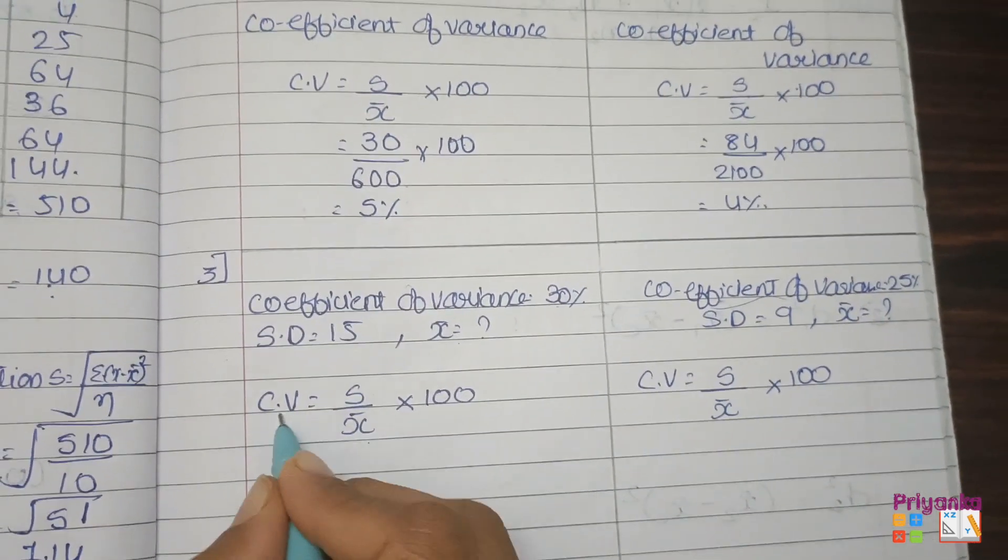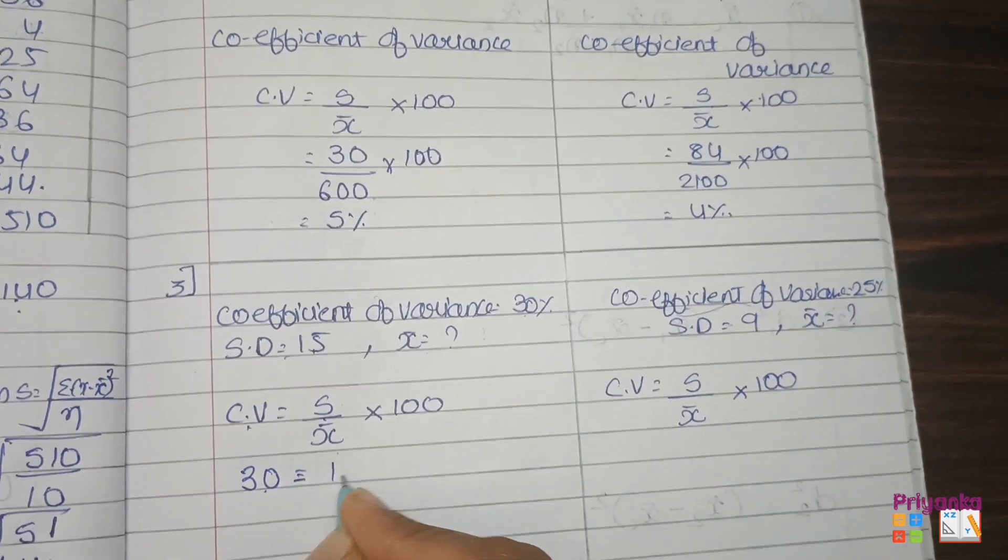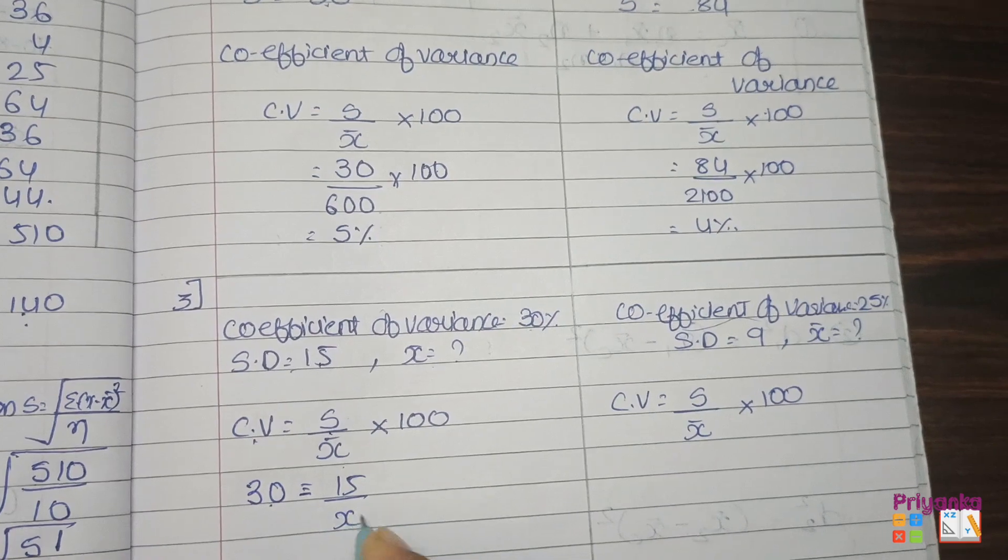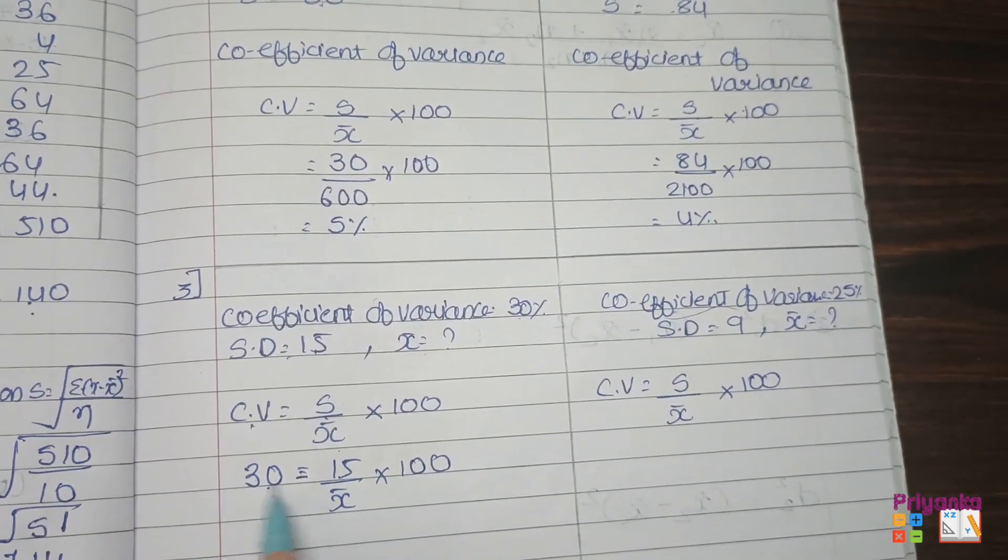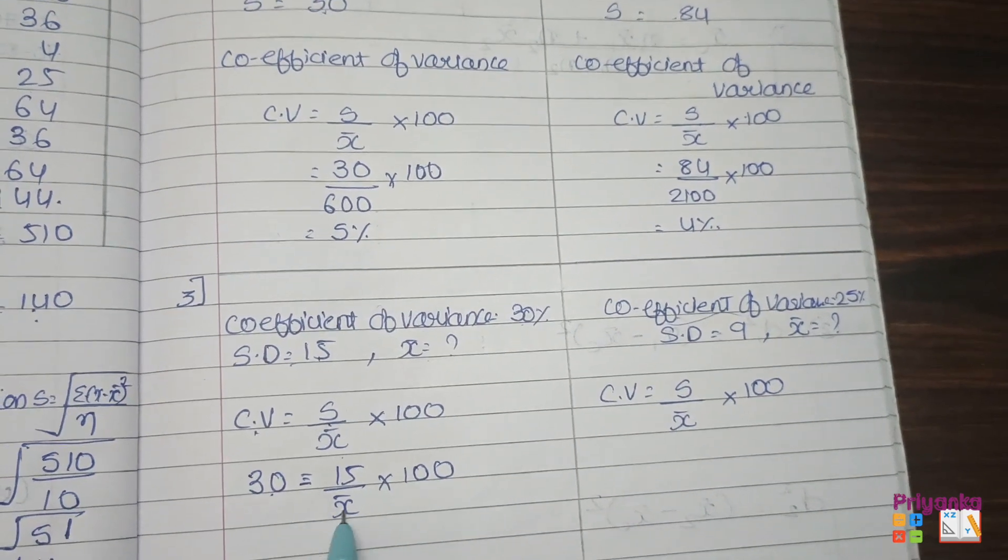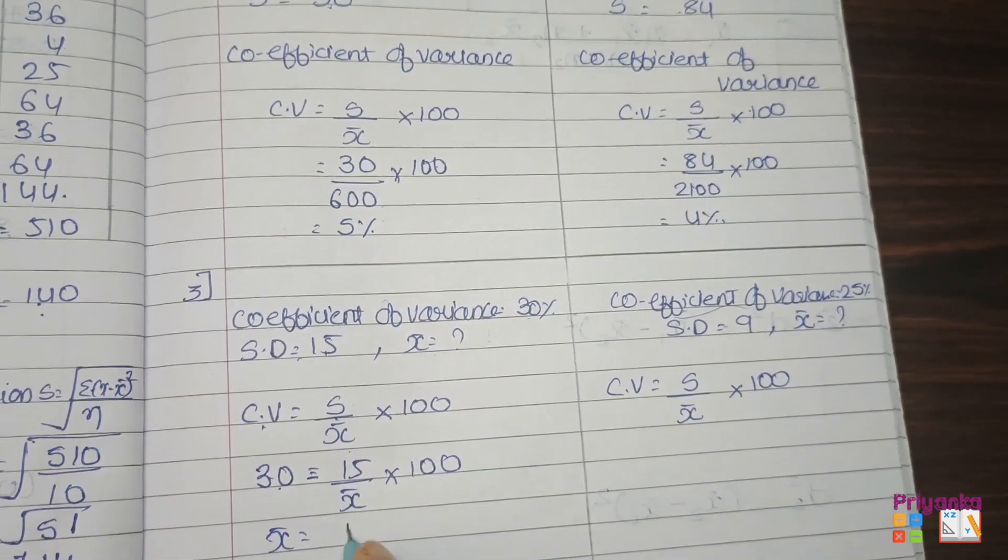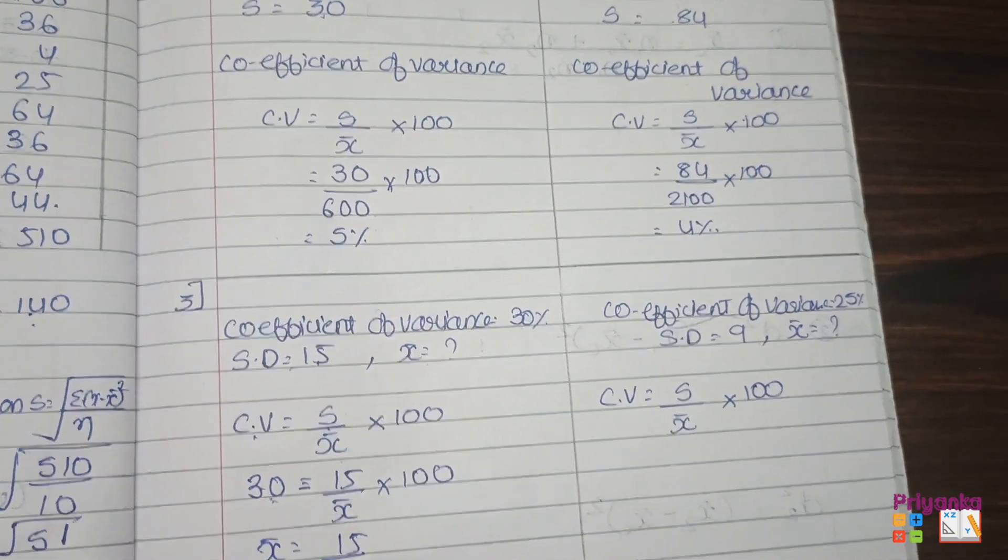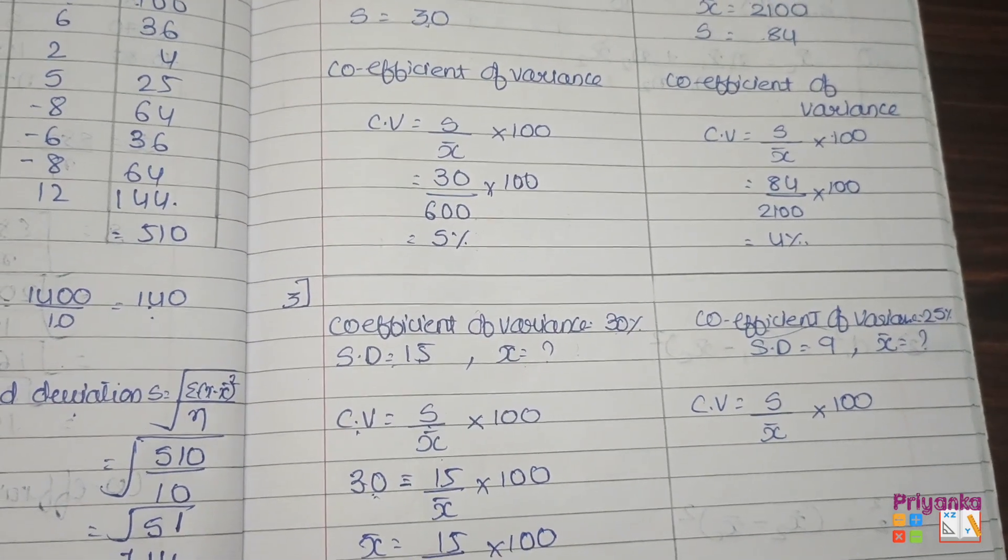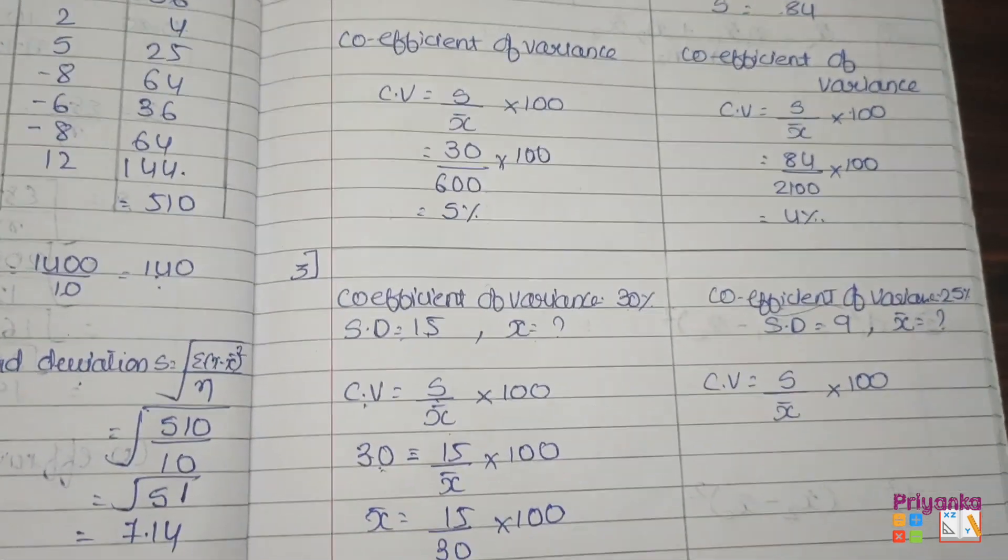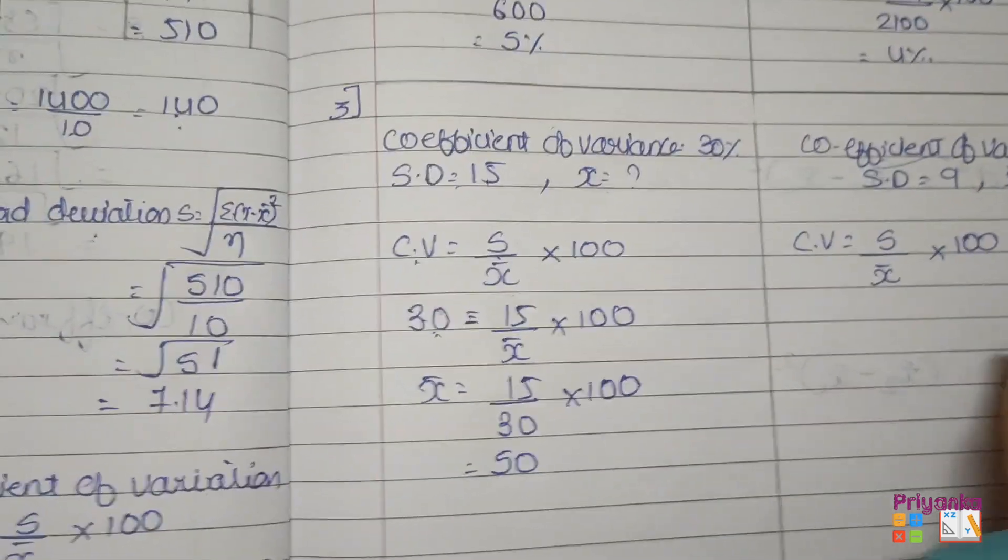CV, the coefficient of variance, is 30. So here first you have CV. Standard deviation from the question information given is 15. Keep the mean as it is and 100. Now we can swap the value of position of the mean and coefficient of variance. Keep the mean over here, 15, divide by 30, into 100. On this calculation you will get the answer 50. Very simple and easy.